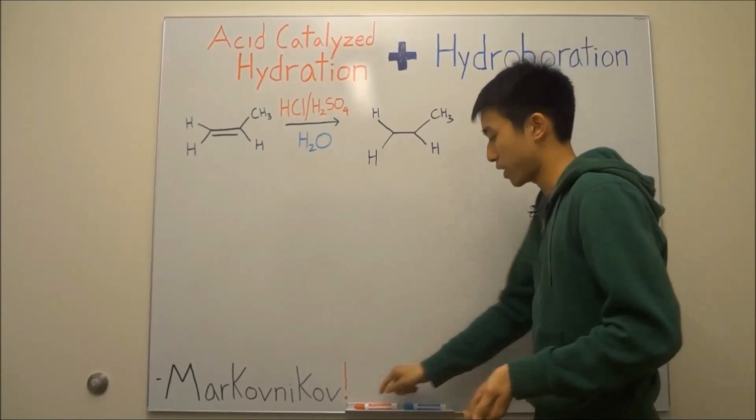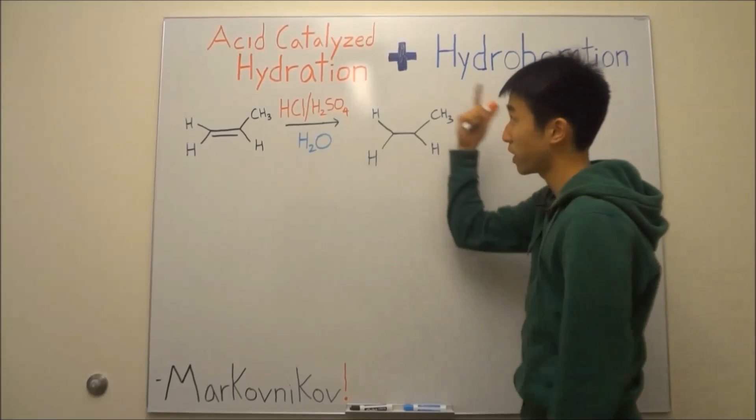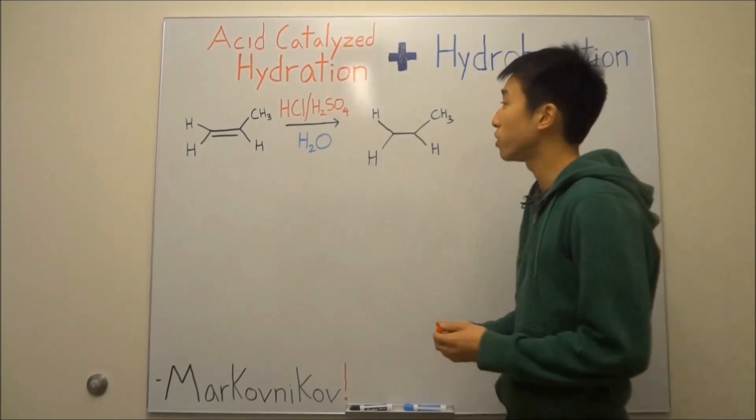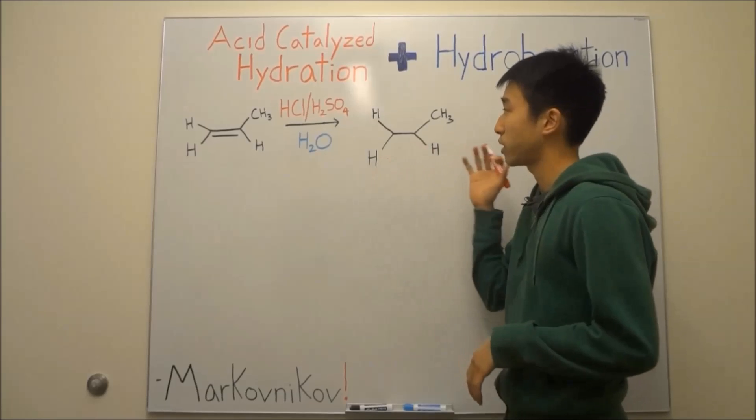All right, so this should be what you have once you redraw your molecule without the double bond or the alkene. All right, next, you have to figure out what you're adding on. Well, because the reaction is acid catalyzed hydration, you know you're going to be adding on a proton. And which side is it going to get added on?